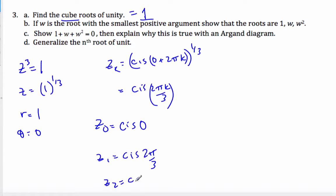And z2, plug in the 2, and we end up with 4π over 3. And these are the three roots of unity.